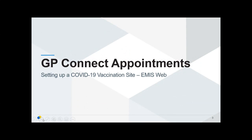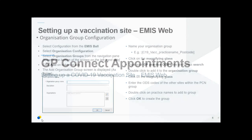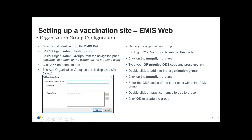Specifically today I'm talking about EMIS Web setup for the designated vaccine sites. First you need to set up an organisation sharing group within the EMIS Web system. To do that, go to the EMIS ball or configuration and select organisation groups in the navigation pane.